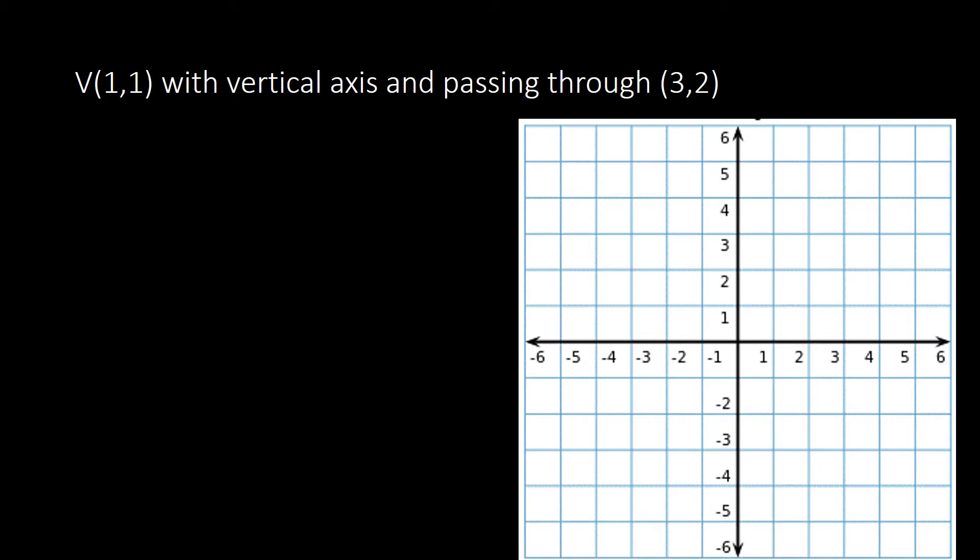Let us write the standard equation of the parabola for a given scenario where the vertex is (1, 1) with a vertical axis, passing through the point (3, 2). We are given the vertex, the axis of symmetry which is vertical, and the point (3, 2). We will draw the scenario and then identify the opening, H, K, and A.